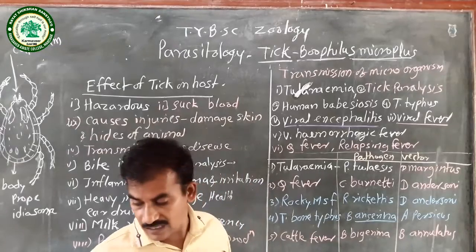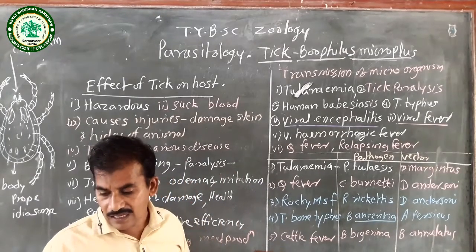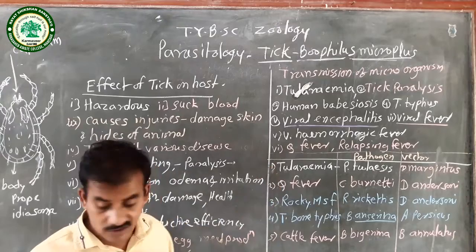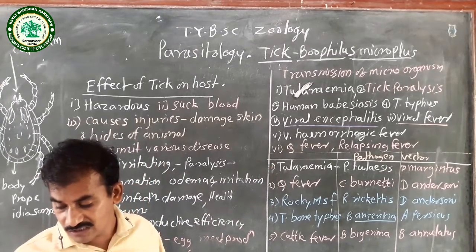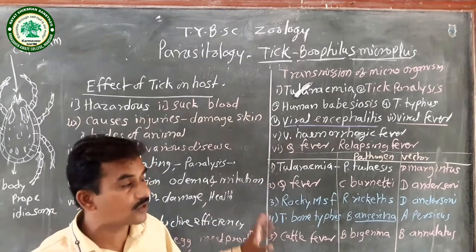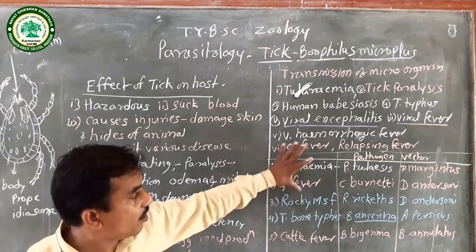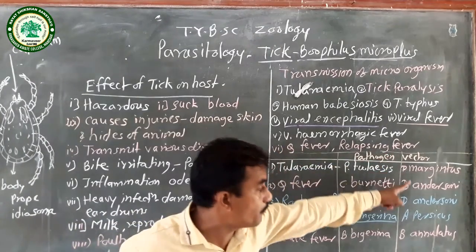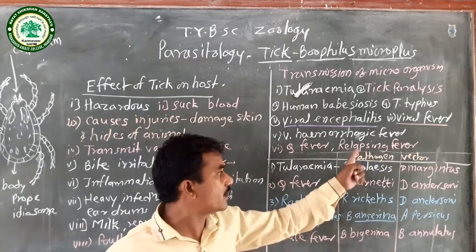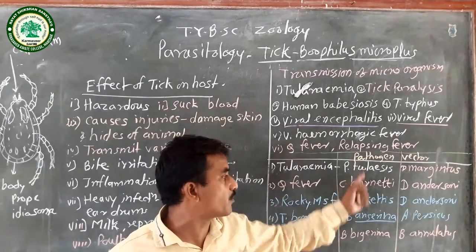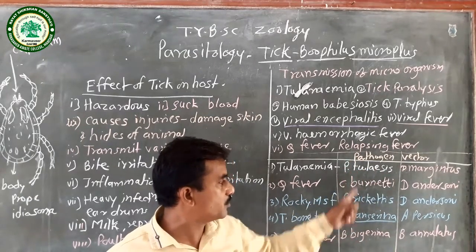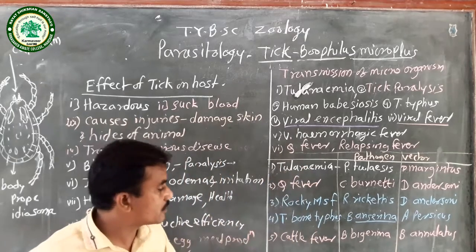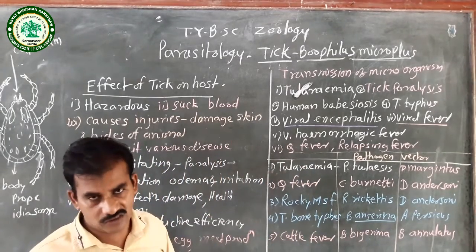Another disease is also found in horses. All these diseases are transmitted by different species of ticks; each tick transfers a particular pathogen, and due to this pathogen, the animals suffer from these types of diseases.